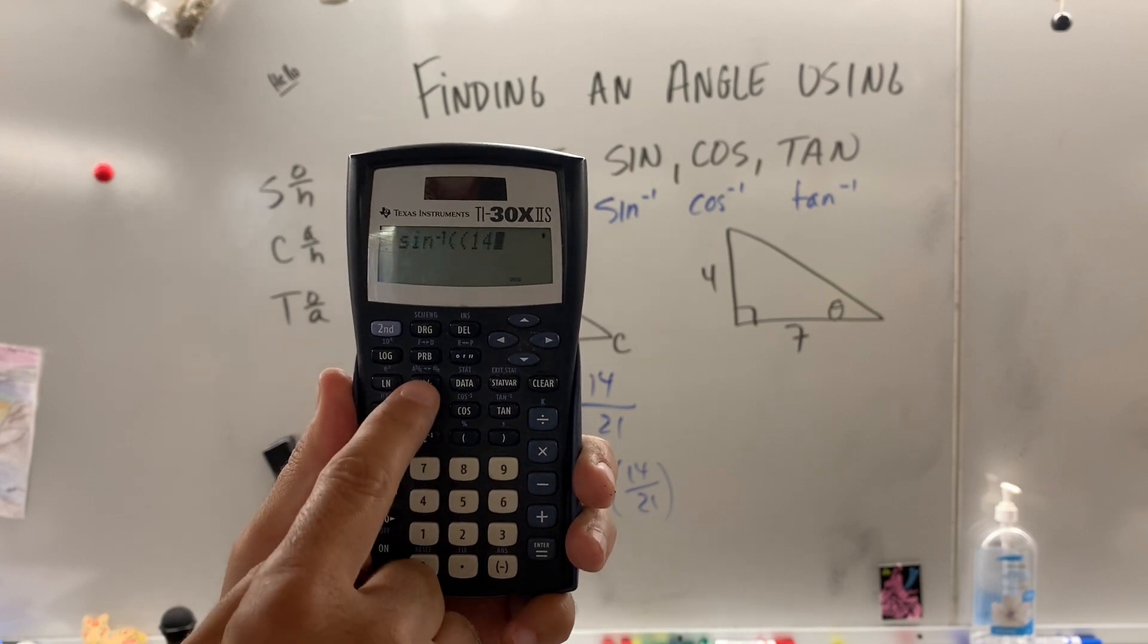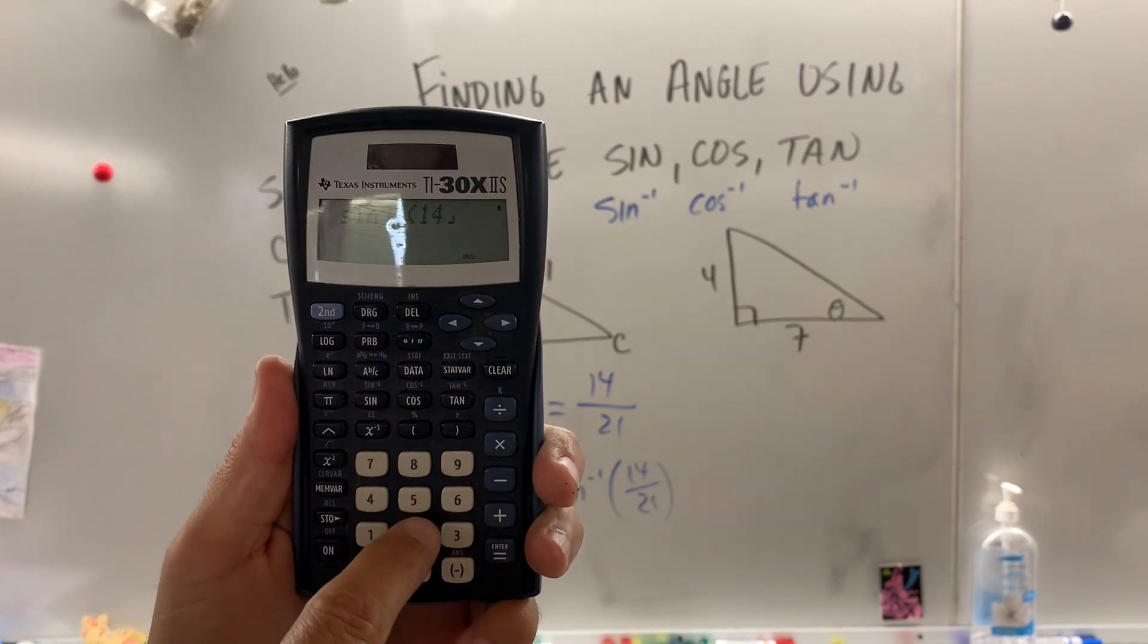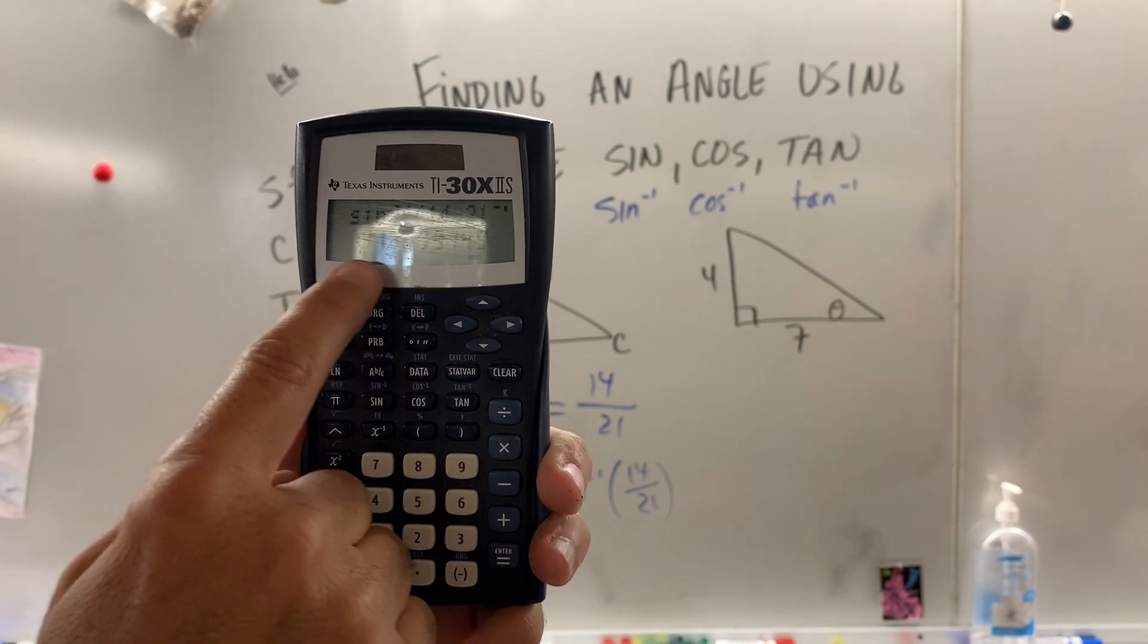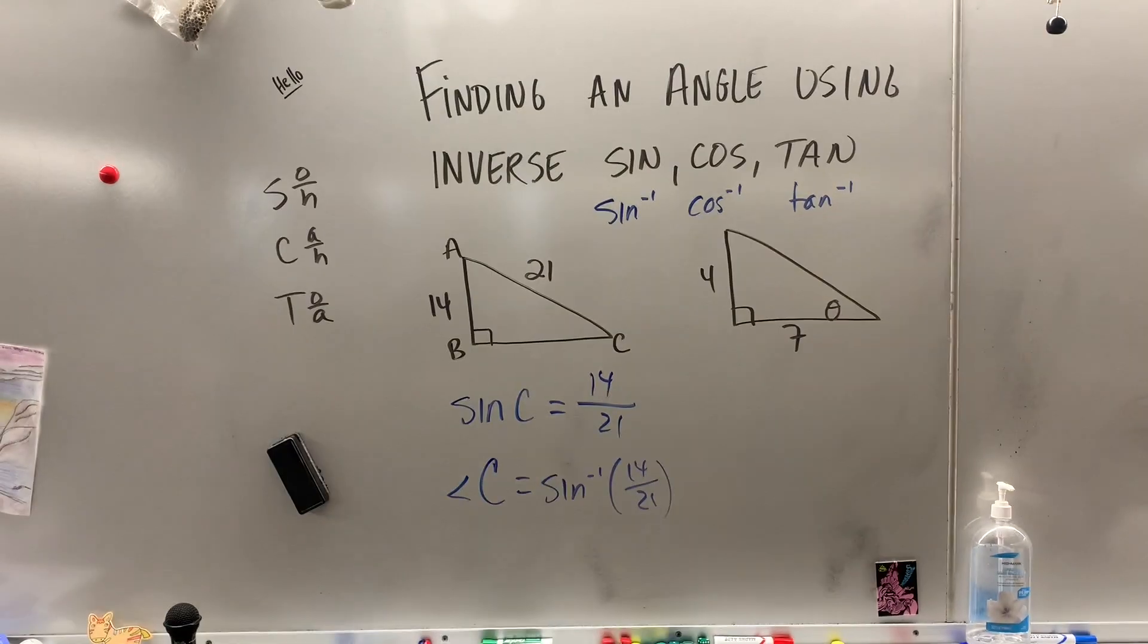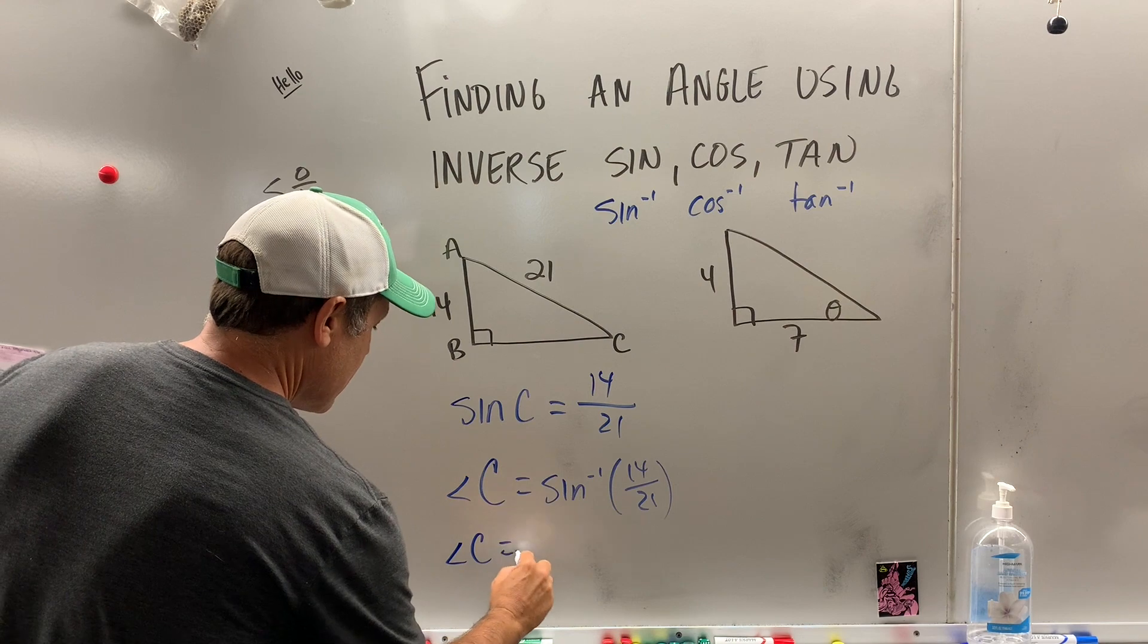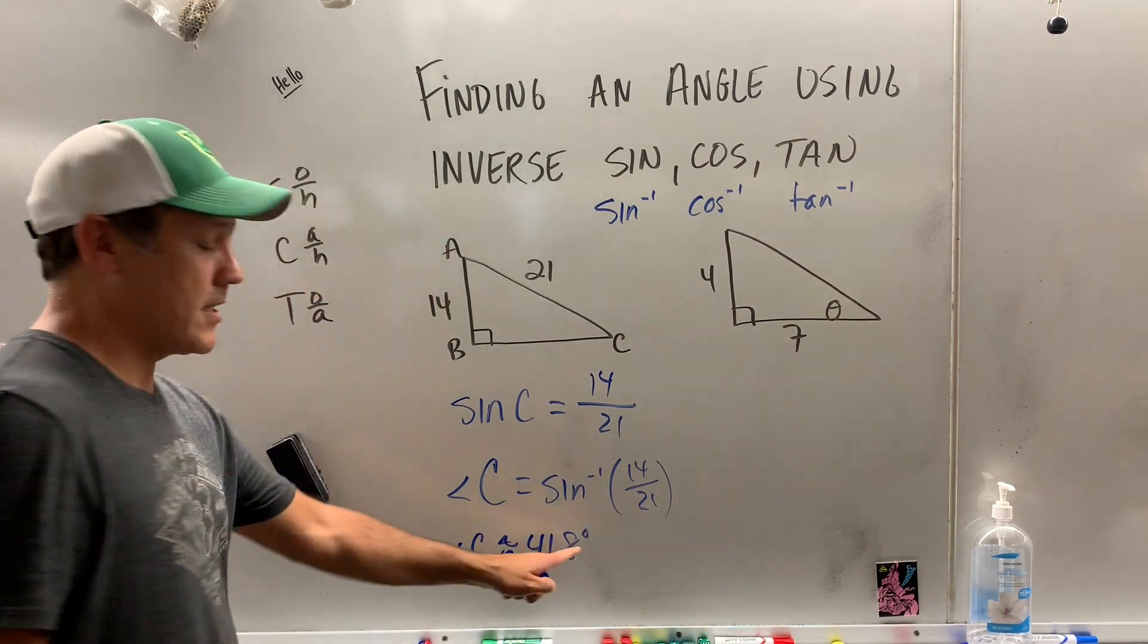By the way, 14, fancy button, that's the fraction button, in case you didn't know that at home. Over 21, let's just close the parentheses, it's about 41.8 degrees. So the measure of angle C is about 41.8 degrees. Don't forget to put degrees.